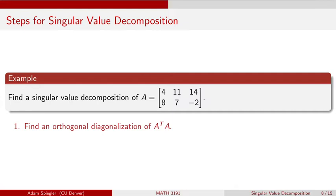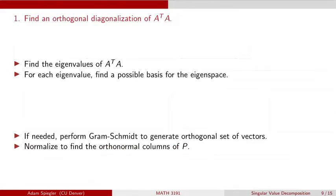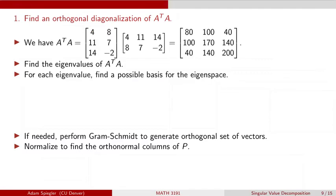The first thing we'd want to do is perform an orthogonal diagonalization of the matrix A transpose A, which is going to result in a symmetric matrix. When we take A transpose times matrix A, we get a 3 by 3 symmetric matrix. The first column is 80, 100, 40. The second column is 100, 170, 140. And the third column is 40, 140, 200.